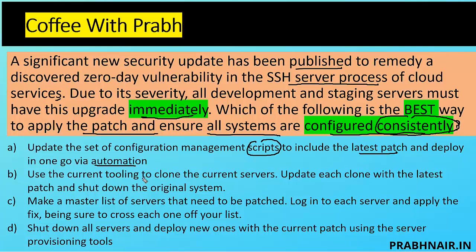Option B: use the current tooling to clone the current server — you can deploy one update on one server and replicate it to other systems, then update each clone with the latest patch and shut down the original system. But that will impact operations. As a cloud security consultant, I am not going to recommend this because patching requires shutting down the original system, which might impact the business. Option C: make a master list of servers that need to be patched, log into each server and apply the fix, crossing each one off your list. It's a good approach, but if we have thousands of servers, it will be a time-consuming task. Still, I can reserve C as a possible best answer.